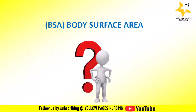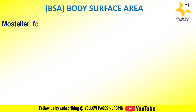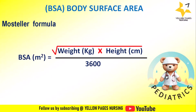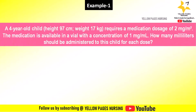Next is the formula. The Mosteller formula to calculate body surface area is: BSA in meter squared equals the square root of weight in kilograms multiplied by height in centimeters, divided by 3600.